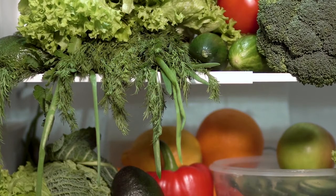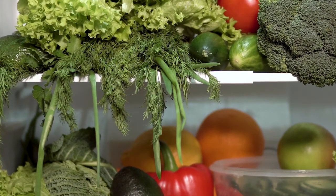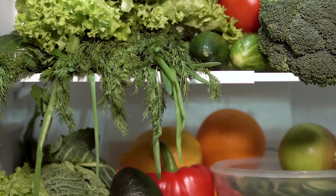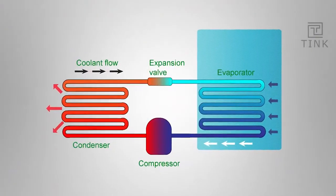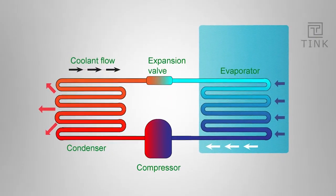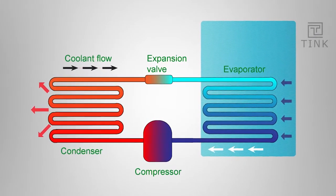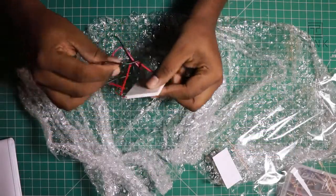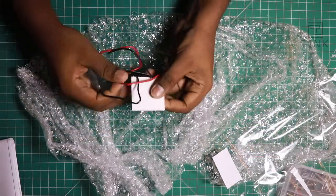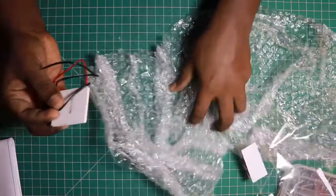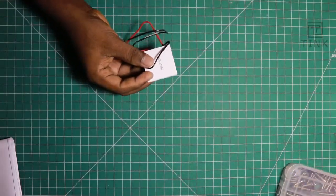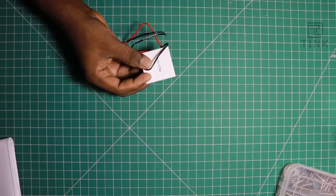We have a cooling element. In the traditional fridge, you can use a compressor, refrigerant, evaporator, and condenser. But we don't want to use a traditional cooling element. Instead, in a Peltier module, we can use a Peltier module. This is the Peltier module.